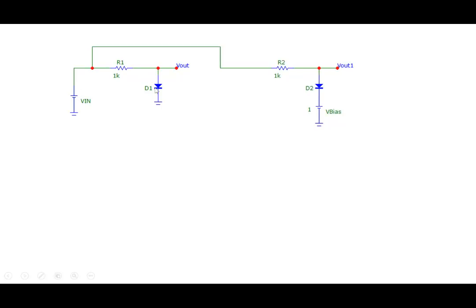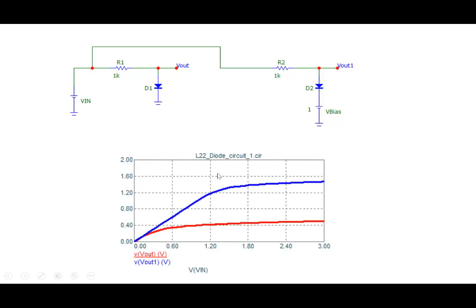If you want this output to saturate at a different voltage, we can add a bias of 1 volt. In the first circuit, saturation was occurring at 0.6 or 0.7V. By adding a 1V bias, we can change it to about 1.7 or 1.8V. So Vout versus Vin is linearly varying with Vin and then saturating after a certain threshold value, which we can adjust by applying the bias.